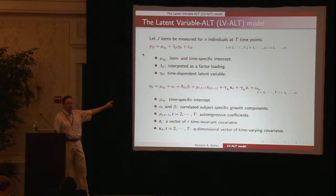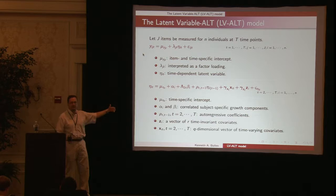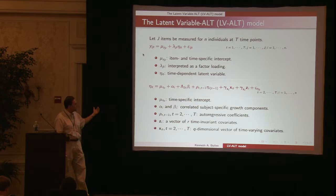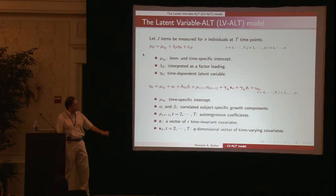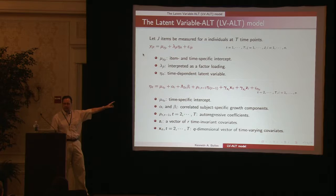The next term, rho_T,T-1 times eta_i,T-1, is the autoregressive term. In addition to the growth curve, we're allowing an effect of the prior latent variable on the current one. Gamma_xt times X_it is an observed time-varying variable with negligible measurement error having impact. Z_i is a time-invariant observed variable. Finally, zeta_i is the stochastic error term for any other influences.